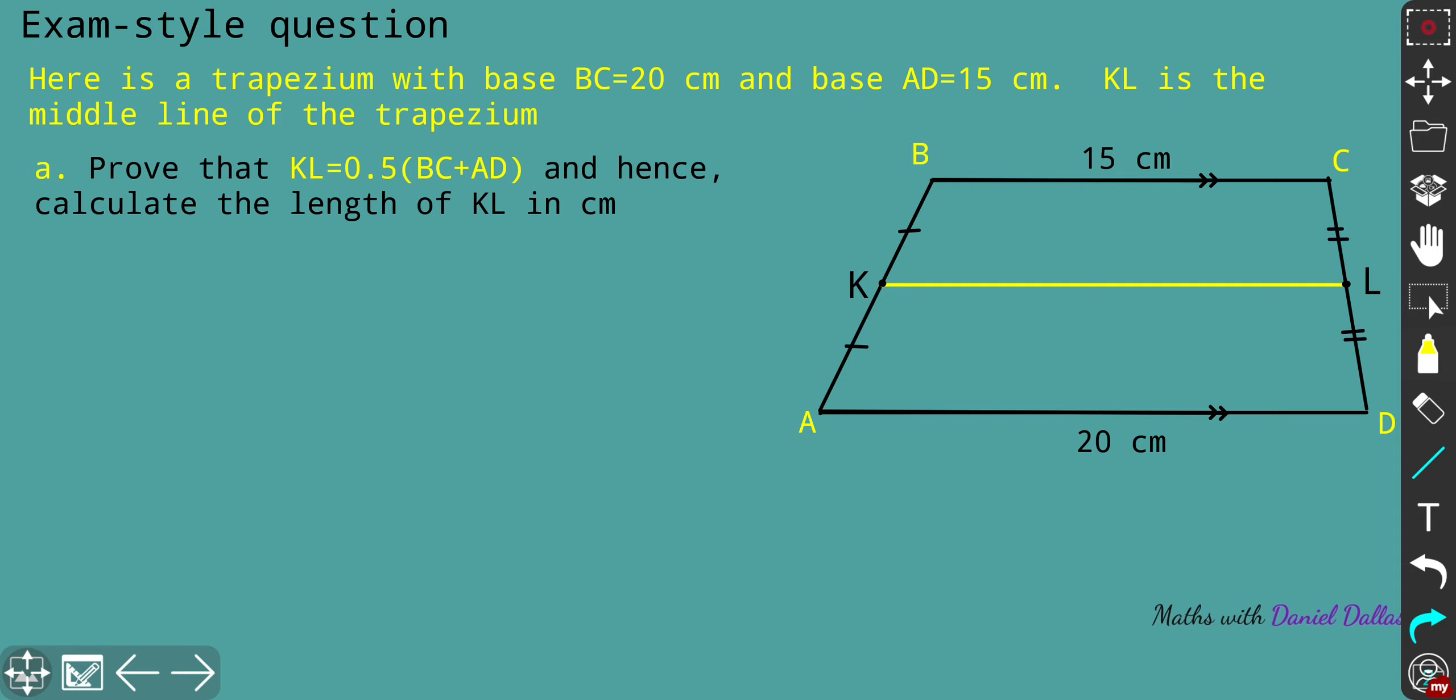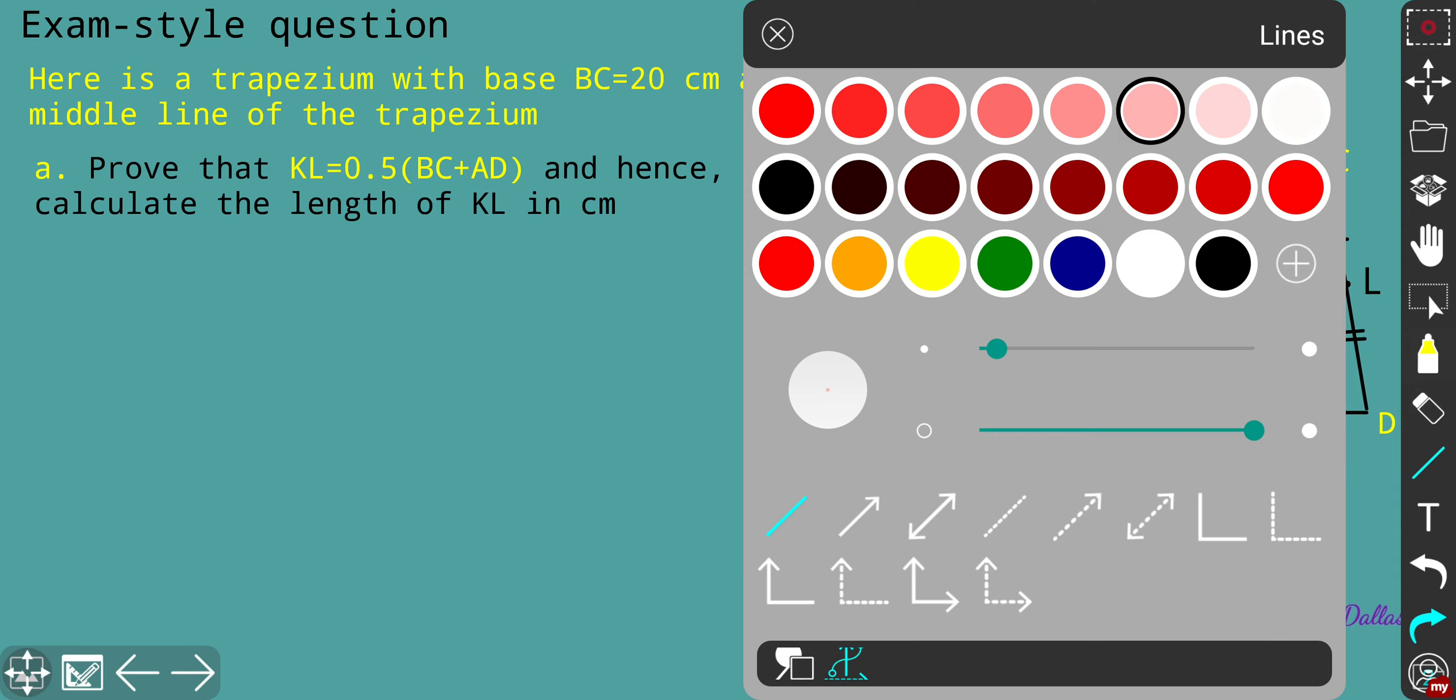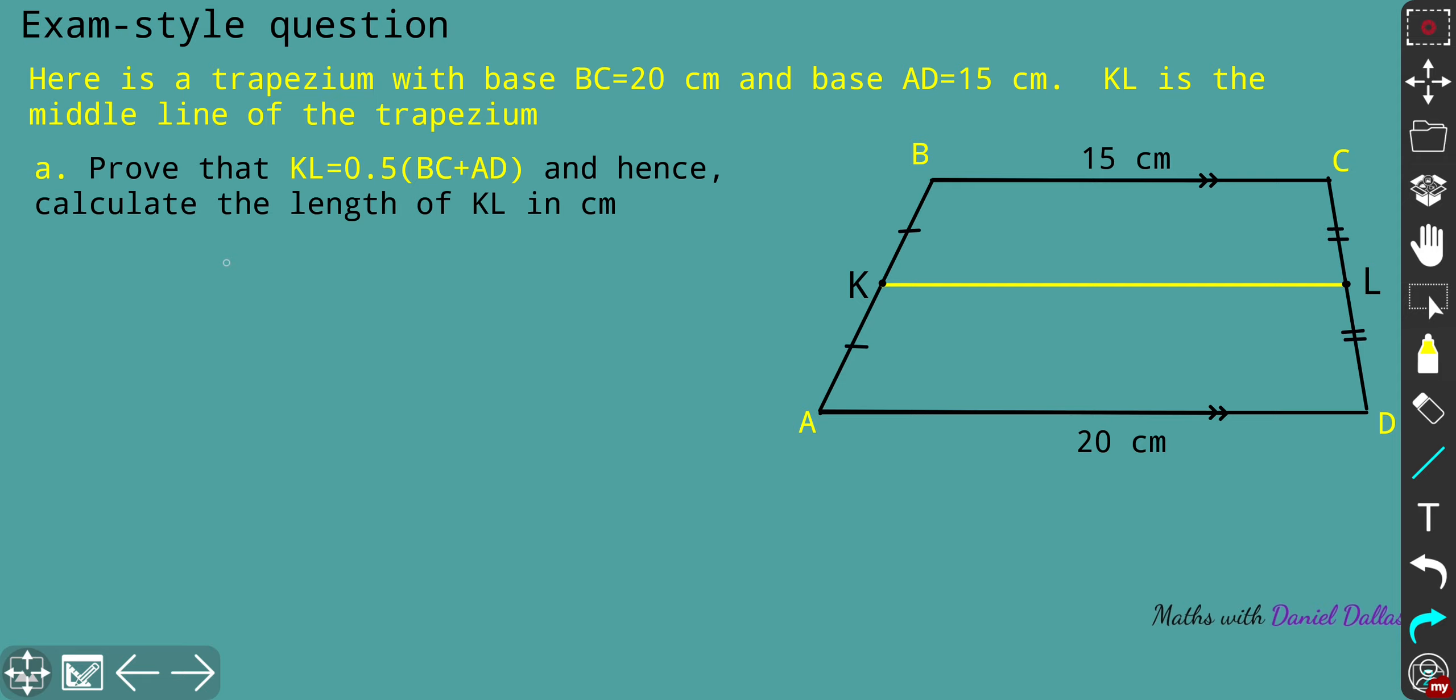What we're going to do is prove that KL, the middle line, is simply the semi-sum of the bases of this trapezium. Which way can we do it? I'm going to use the idea of the middle line for triangles. As you remember, for the triangle, the middle line is half of the base of the triangle.